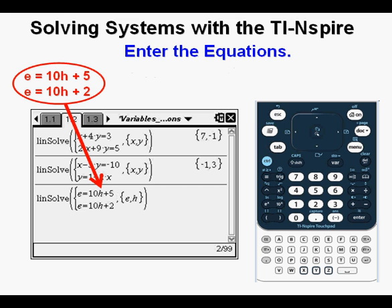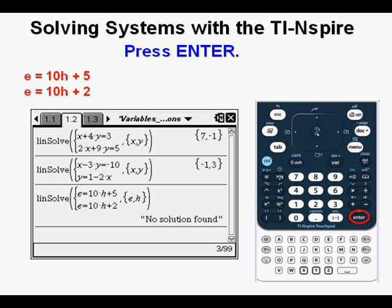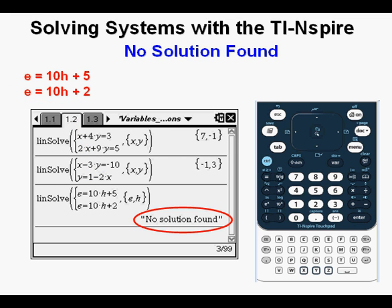Enter the equations as shown: E equals 10h plus 5 and E equals 10h plus 2. Press Enter. We get our answer of no solution found, and if we had been thinking before trying to solve this problem, we would have known that there could be no solution since the equations have the same slope but different Y intercepts. So in this problem, we learned that we can use variables besides X and Y and also what no solution looks like.